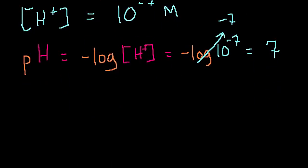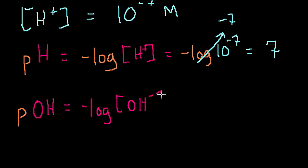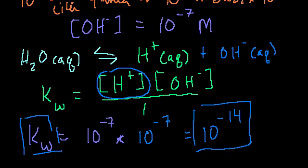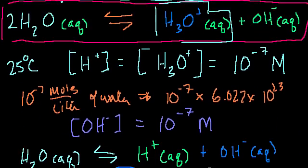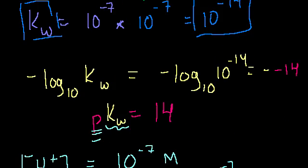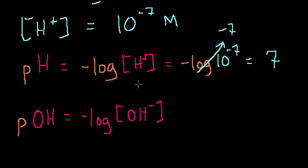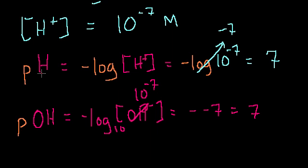You can do the same exercise for the pOH, the concentration of hydroxide ions. The pOH is the negative log of the hydroxide concentration. The hydroxide concentration was also 10 to the minus 7 molar. So pOH equals minus log of 10 to the minus 7, which is also equal to 7. So the pH and the pOH of pure water are both equal to 7.